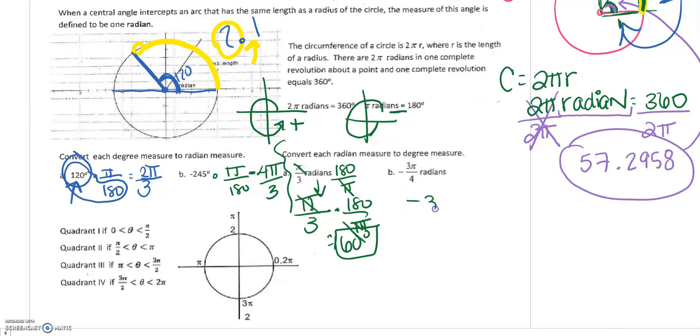Same thing. Negative 3π over 4 times 180 over π. π's cross simplify. Negative 3, 180 over 4 is negative 135.